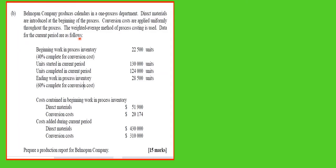The weighted average method is being used, which means we can lump all costs together and find an average. If we were using FIFO, the order in which units enter production would be significant and we would need to keep them in their respective periods. The first step is to account for the physical units.